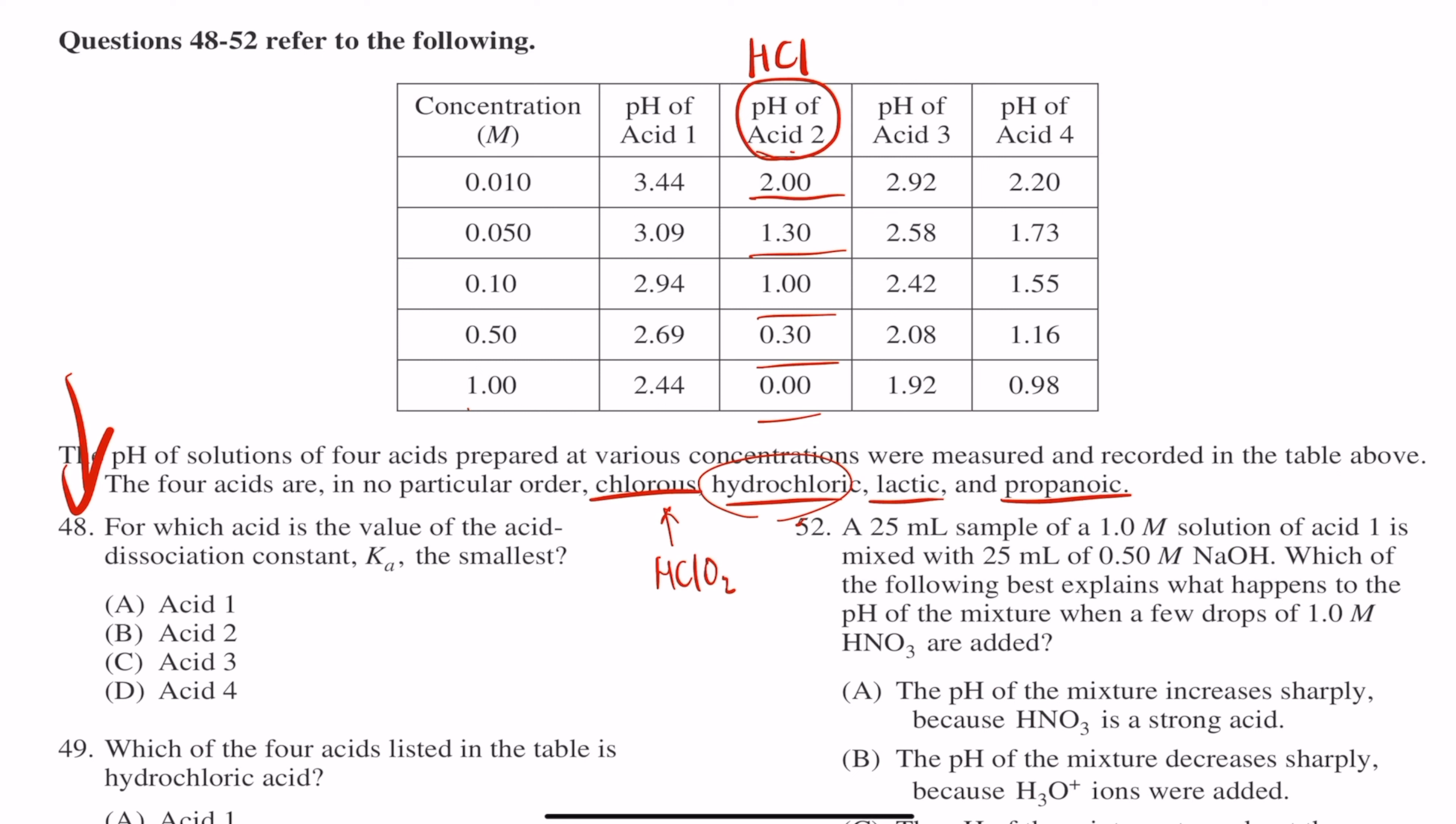So anyway, number 48, for which acid is the value of the acid dissociation constant, Ka, the smallest?